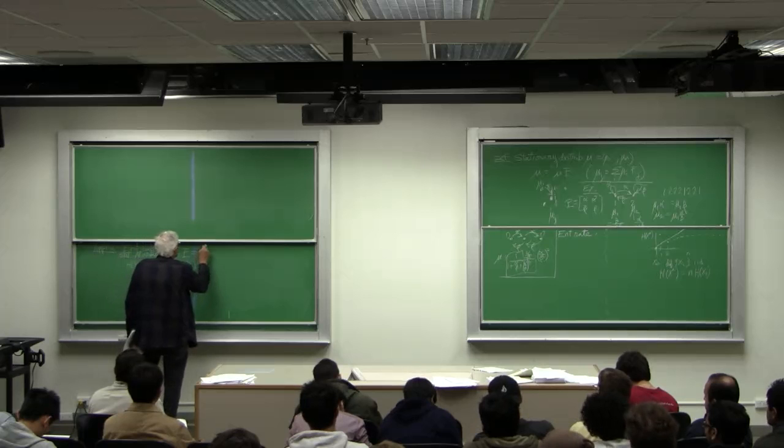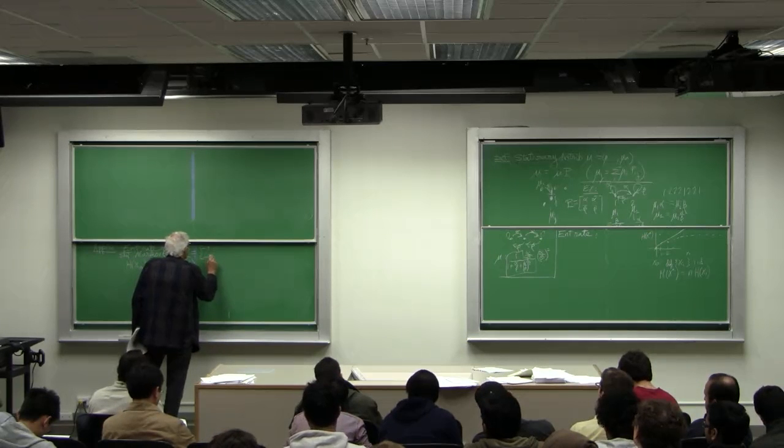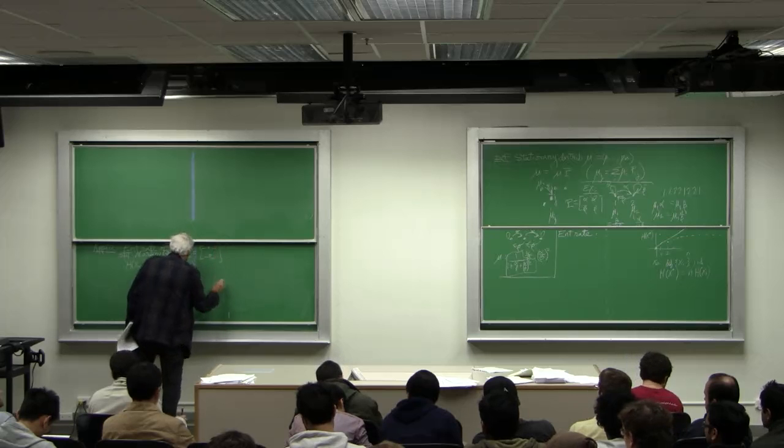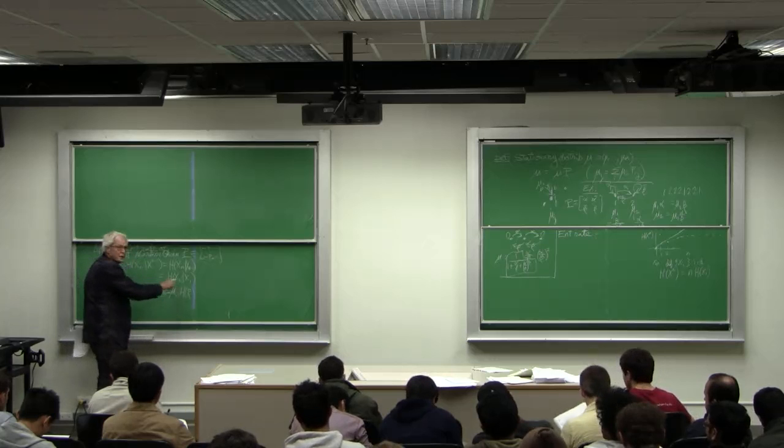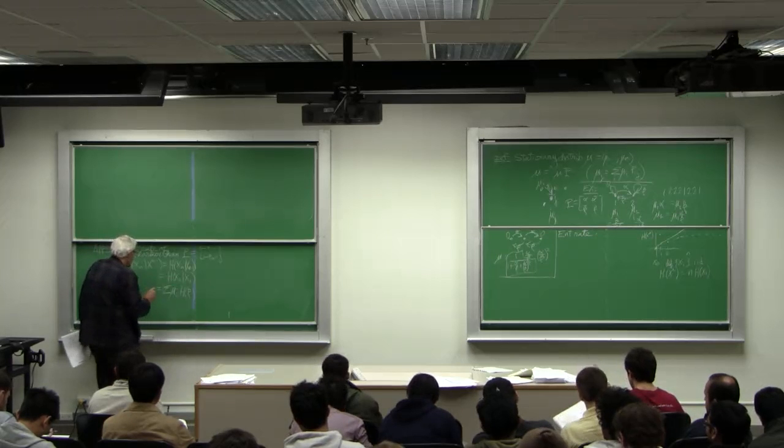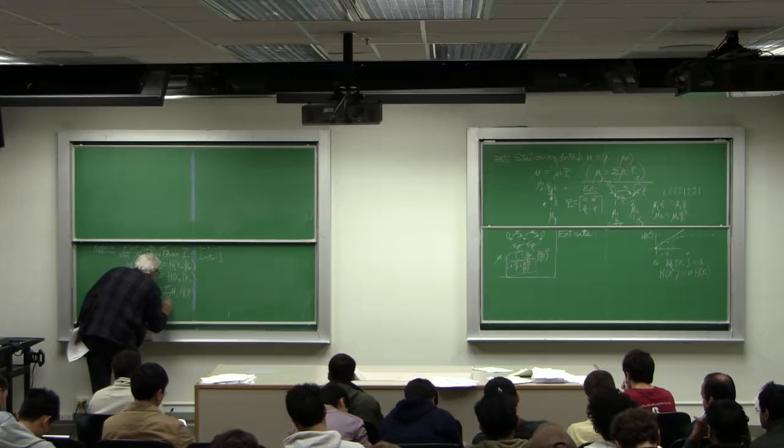So P is P_1, P_m. OK? Because that's the conditional entropy. And this is summed over i.